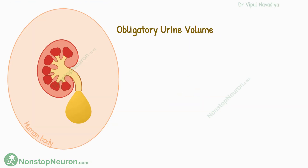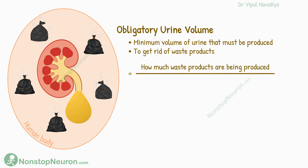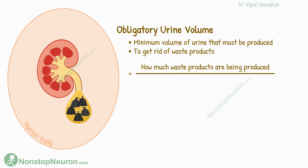An obligatory urine volume is the minimum volume of urine a person must produce to get rid of waste products. It depends on two things: one, how much waste product is produced in the body, and second, how tightly these waste products can be packed in urine — or in other words, the maximum concentration that urine can achieve.